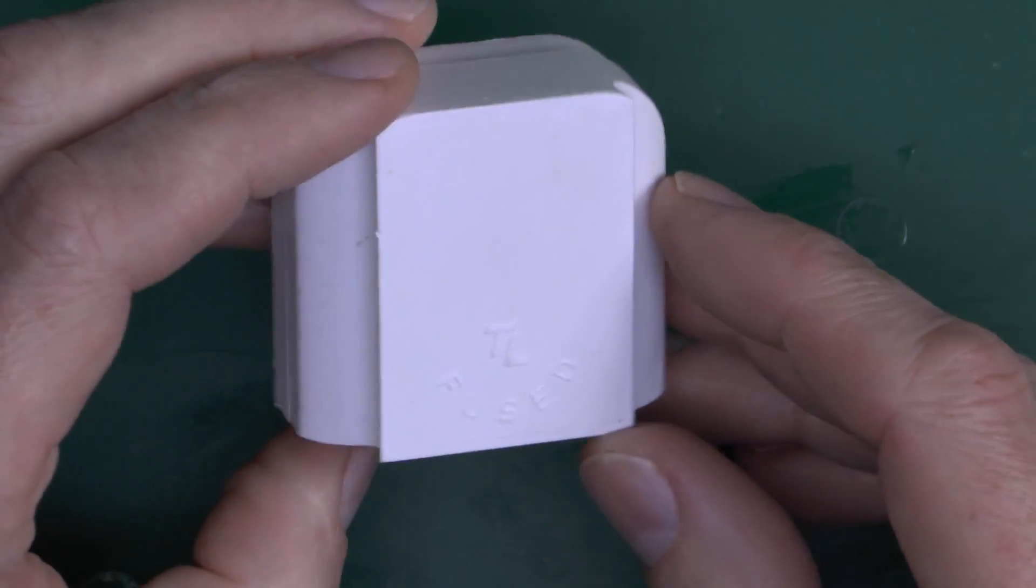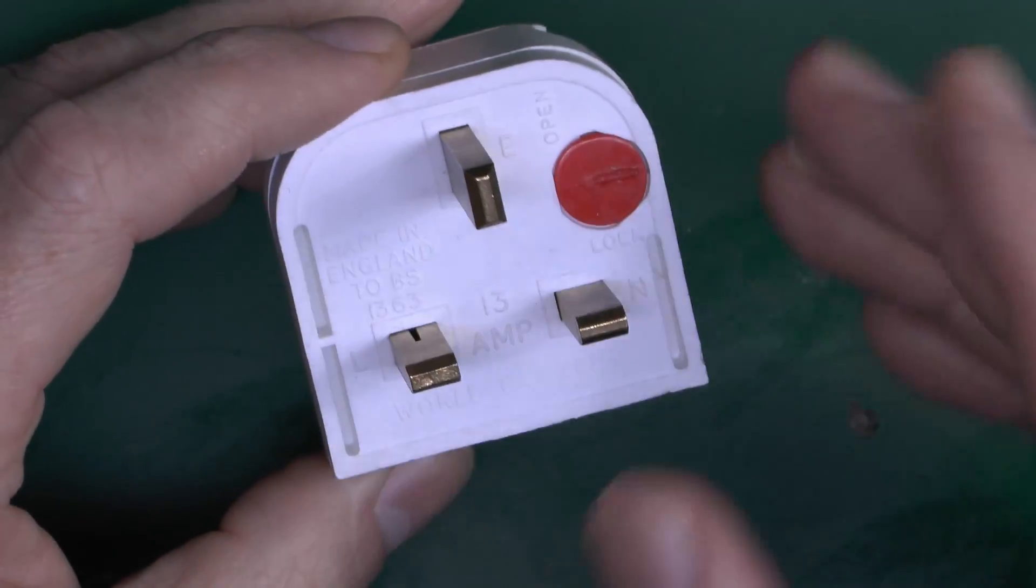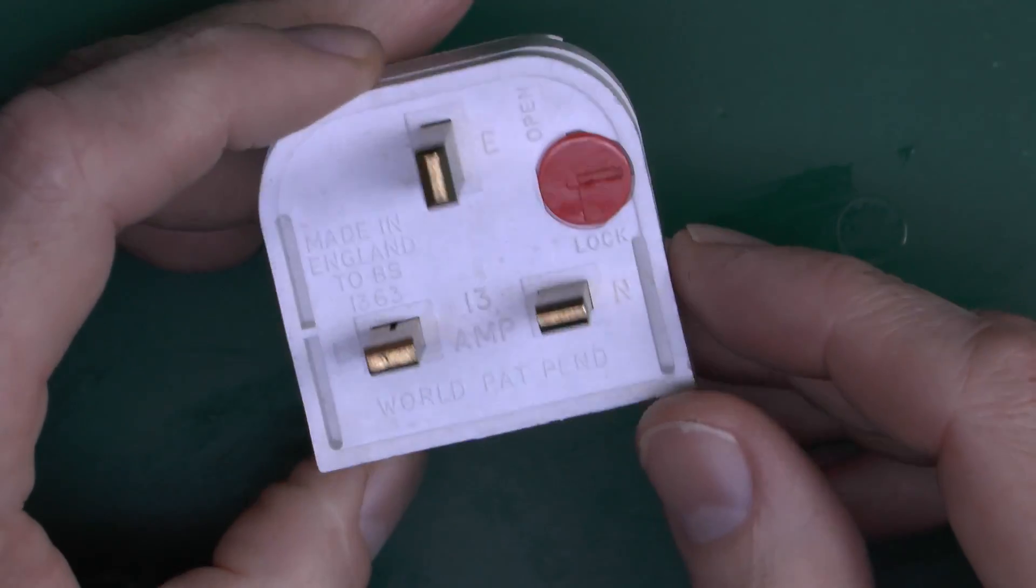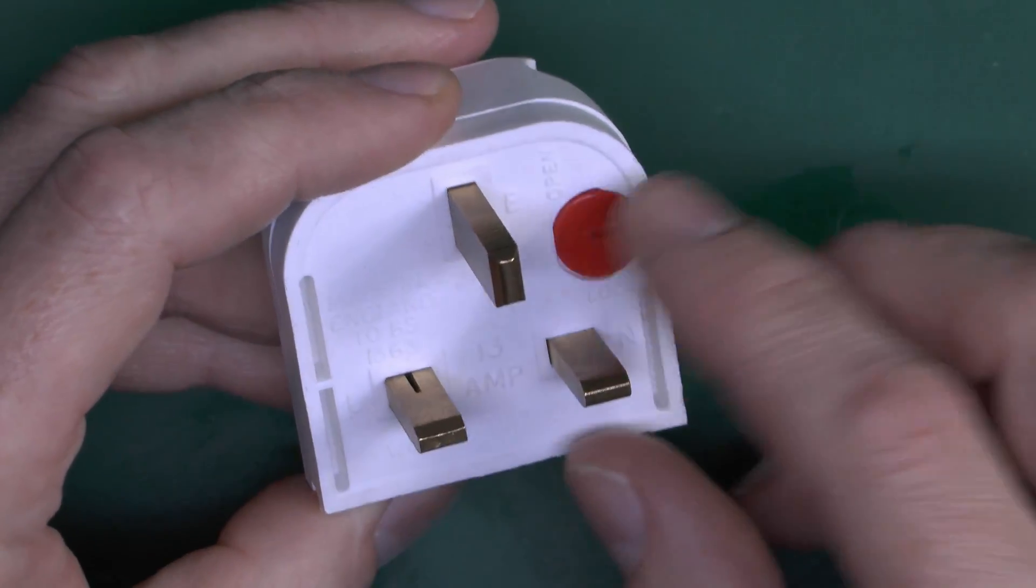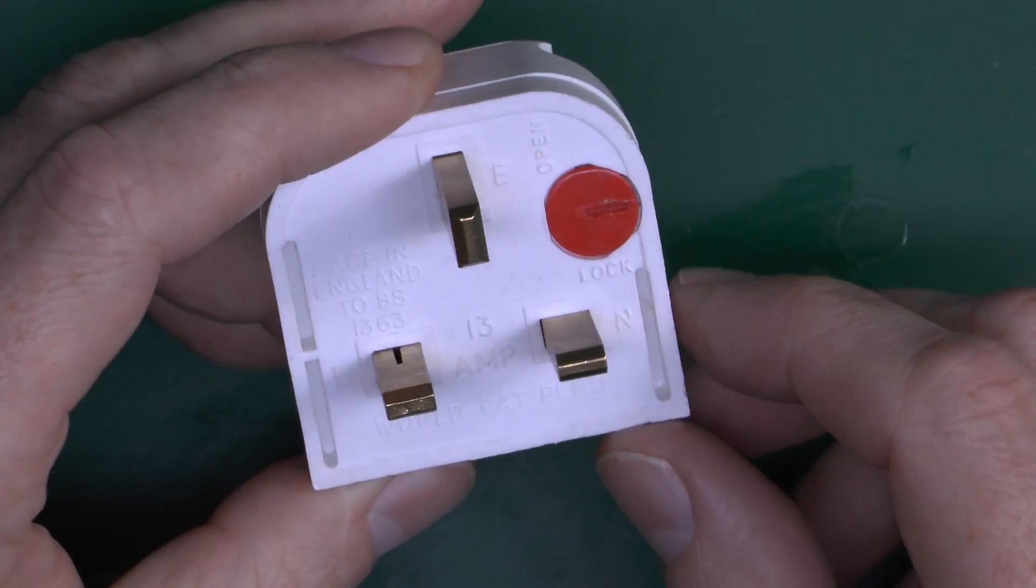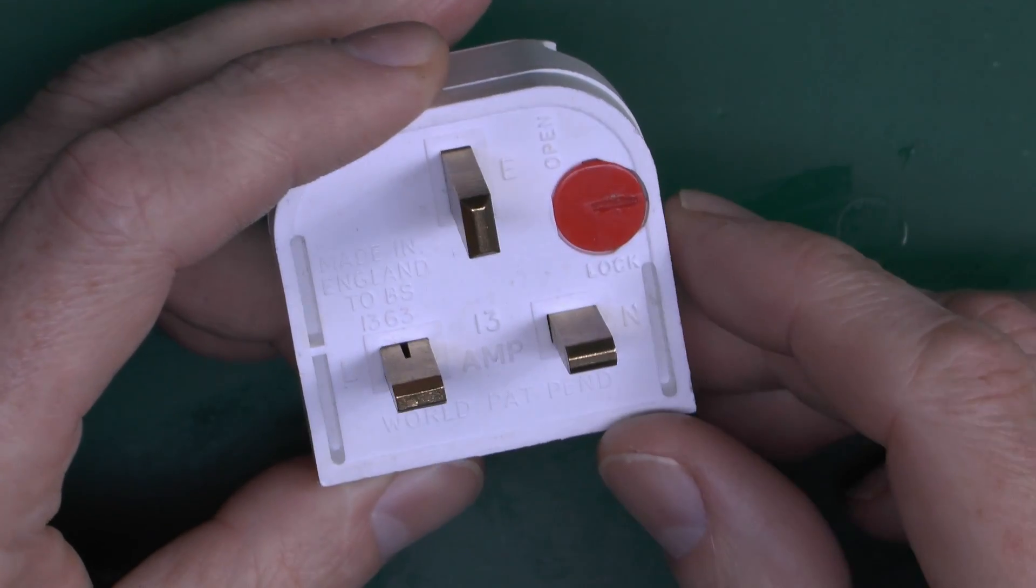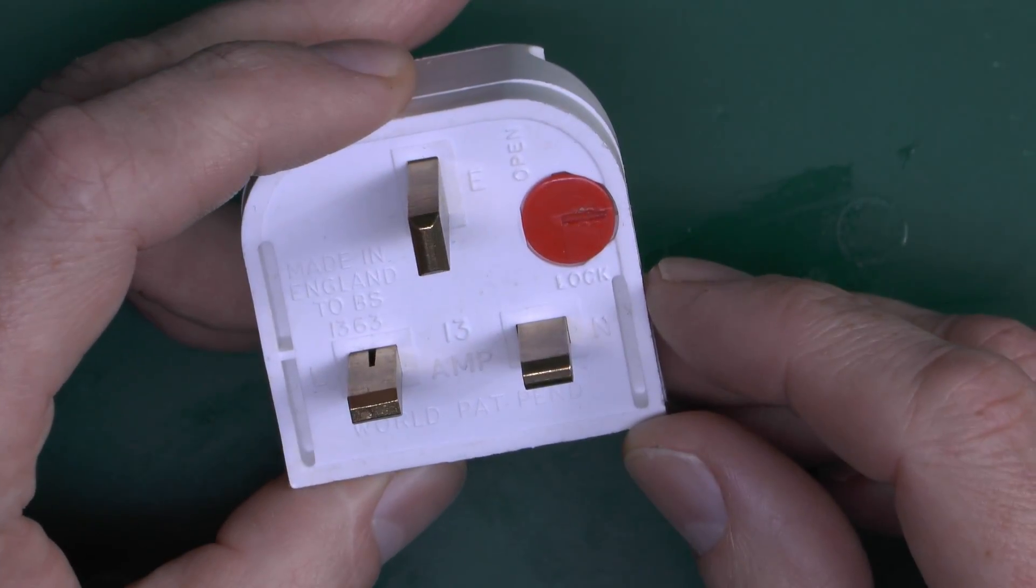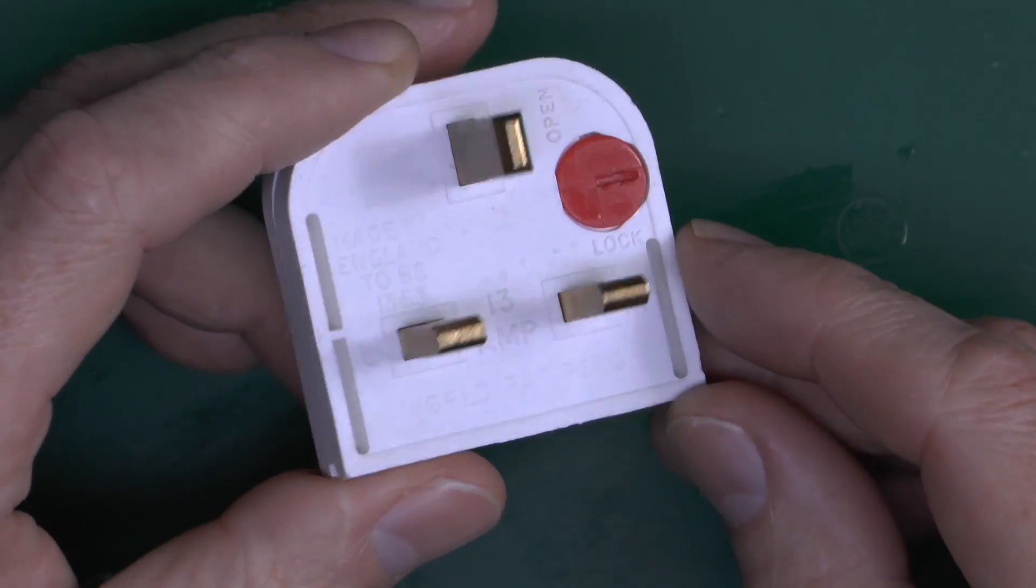And the design of this one is somewhat unusual, because it doesn't have any sort of fixing screws in the normal style of these things. It just has this plastic twist lock thing here, made in England, and BS 1363 of course, and 13 amps as all of these things generally are.